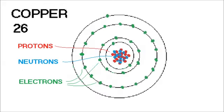Good conductor, bad conductor — it's all about how easy it is to add an electron to an atom or subtract an electron from an atom. It's all about the ionization. If something's easy to ionize, then it's a good conductor.